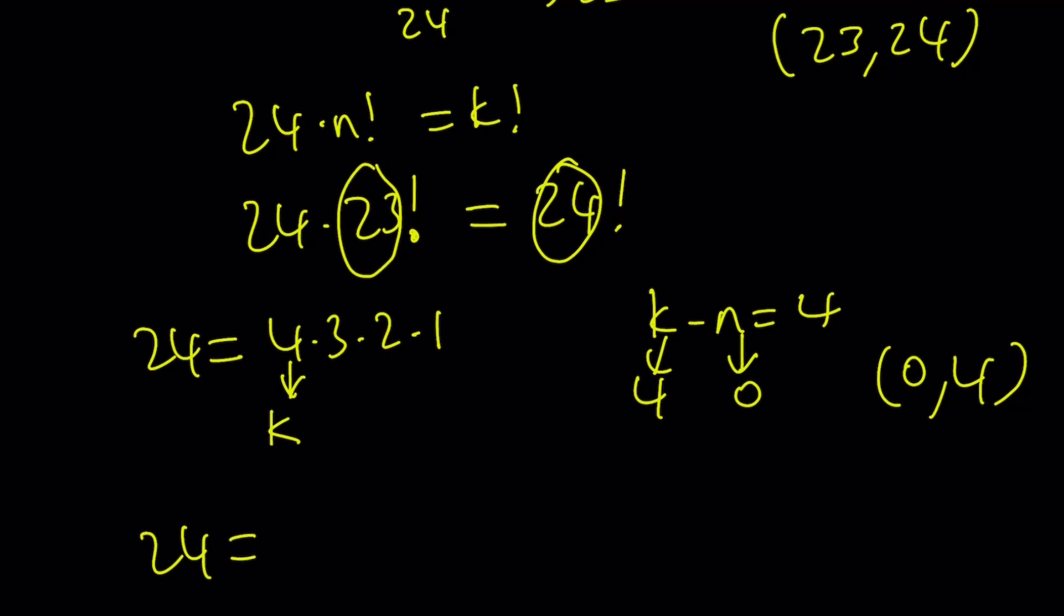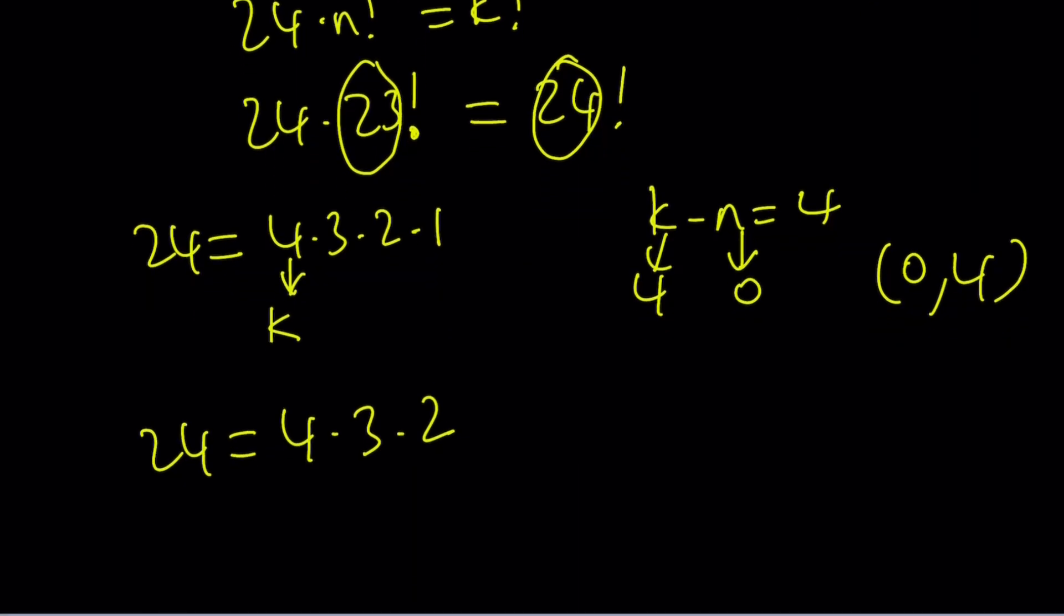We have another case. Notice that since 24 is 4 times 3 times 2 times 1, you can also write it as 4 times 3 times 2. You don't have to include the 1. In this case, this gives us another solution. Because the largest number is 4 again, and k is 4, but k minus n is 3 this time because I used three numbers. So when k is 4, n is going to be 1, giving me 1 comma 4.